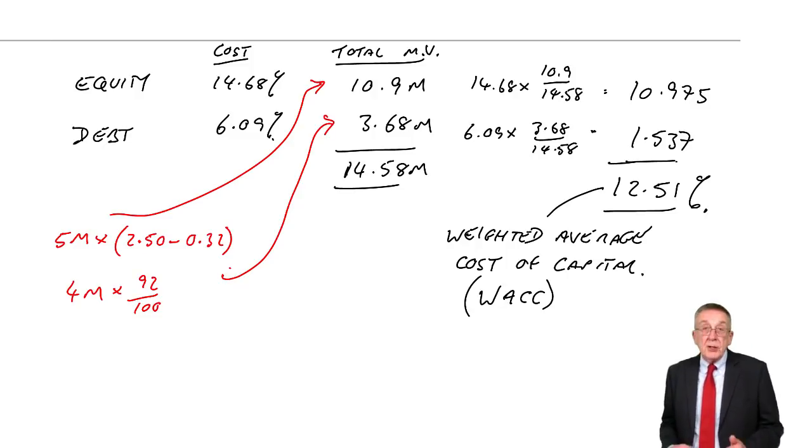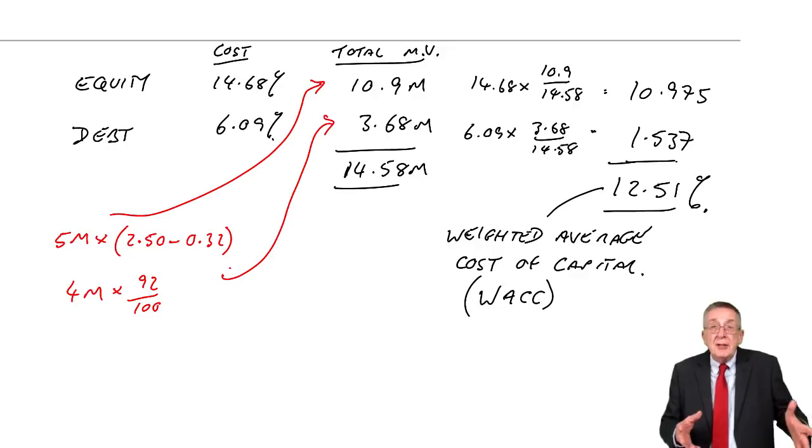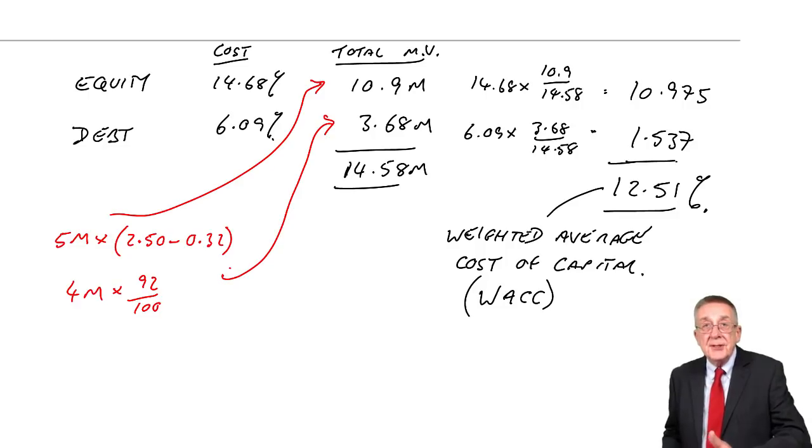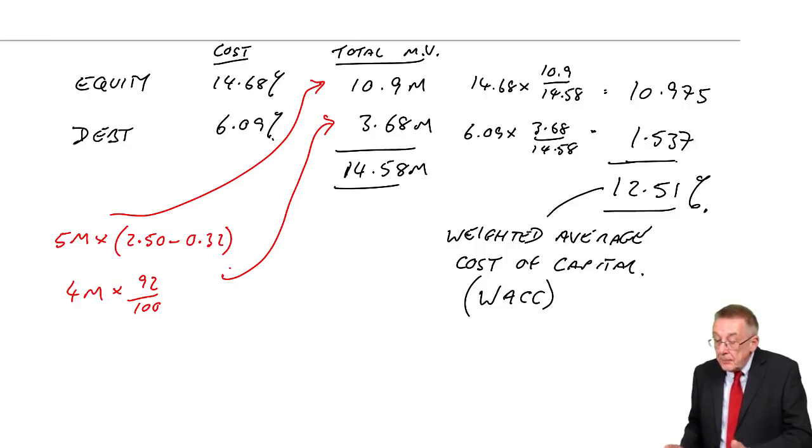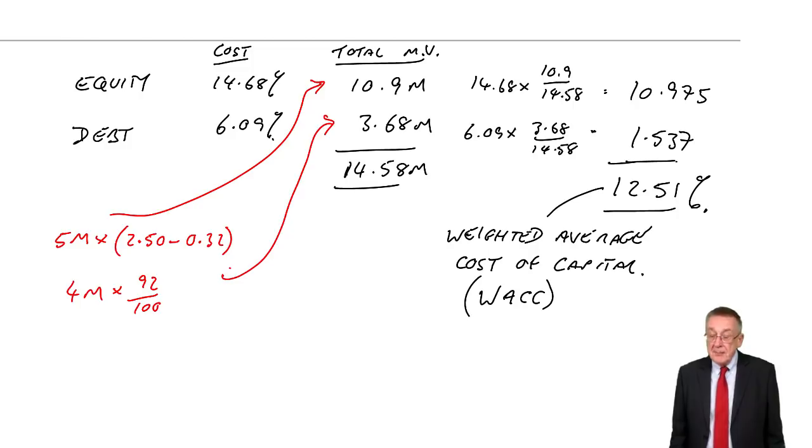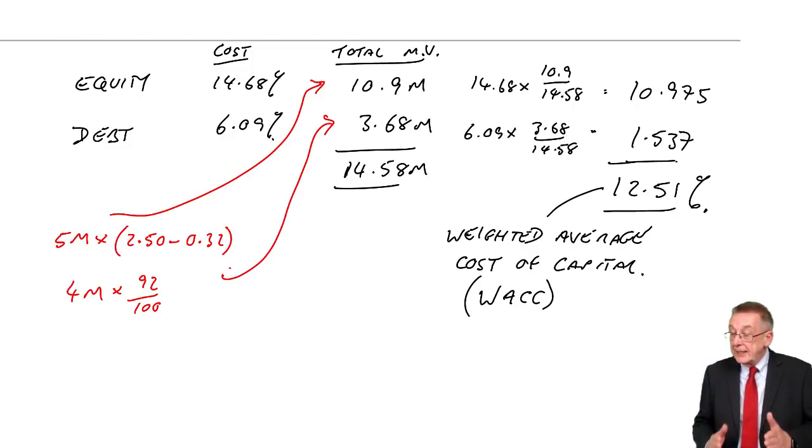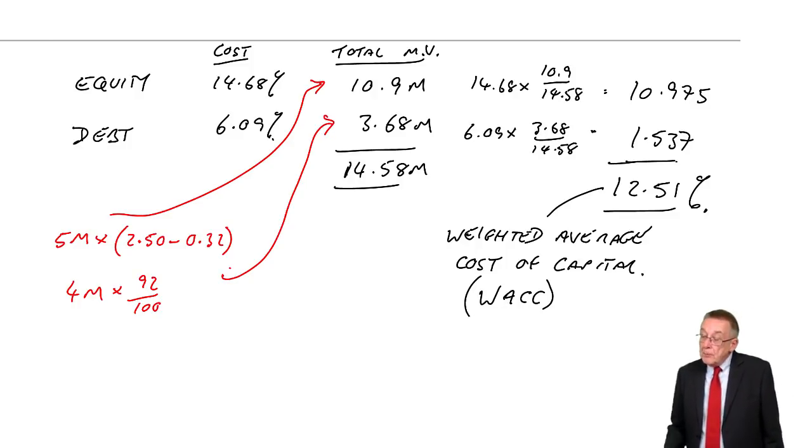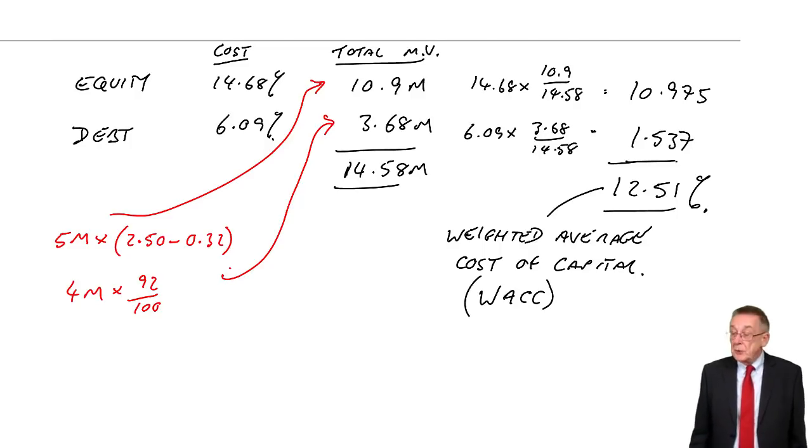It's the cost of the two sources separately, weighted by the total market values. There could be more sources, there could be two types of equity, there could be preference shares with a constant dividend where G is zero. There could be more than one source of debt. We calculate the cost of each source of finance separately and weight them by the total market value of each source.